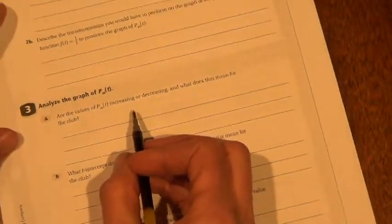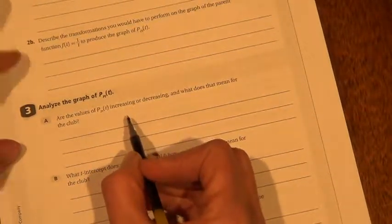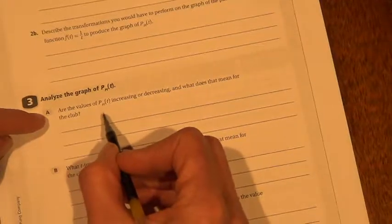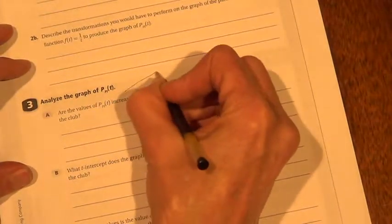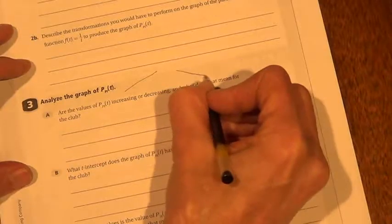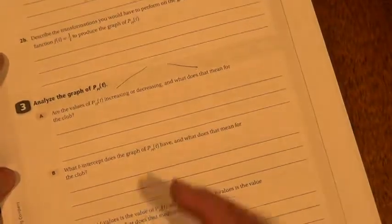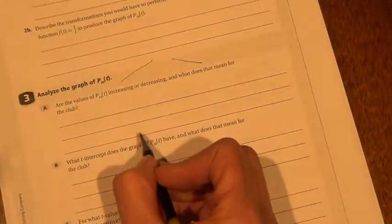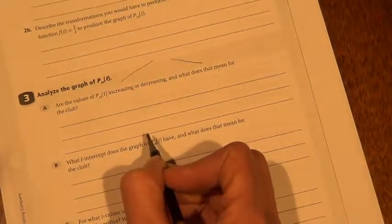Are the values of profit per item increasing or decreasing? What does that mean for the club? So remember, increasing looks like that. Decreasing looks like that. Go back and look at the graph and decide which way is it going. And explain what you think that means for the club in terms of the context of the problem. So you've got to think about t-shirts and profit per item.